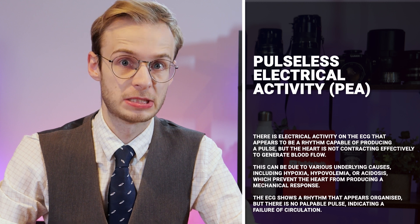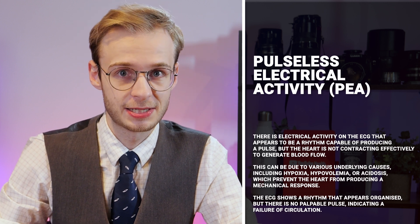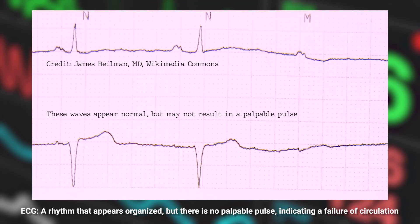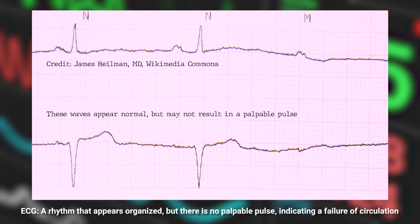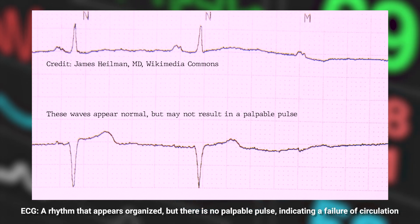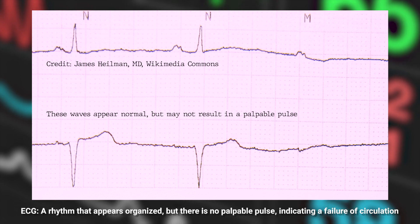Lastly for arrest rhythms, PEA — pulseless electrical activity. This means there is electrical activity visible on the ECG, but it is not coordinated with a palpable pulse. Despite that electrical activity, the heart is not contracting effectively enough to generate a palpable pulse. This could be due to hypoxia, hypovolaemia, acidosis, or other mechanical or physiological causes. Crucially, the ECG may appear organised, but on examination there is no palpable pulse, indicating circulatory failure.